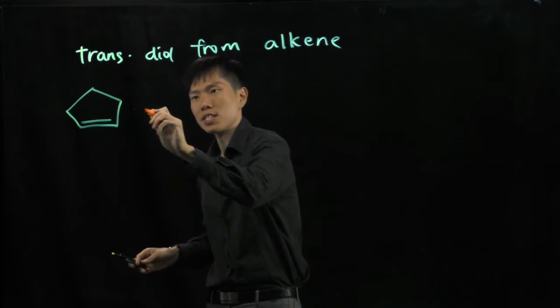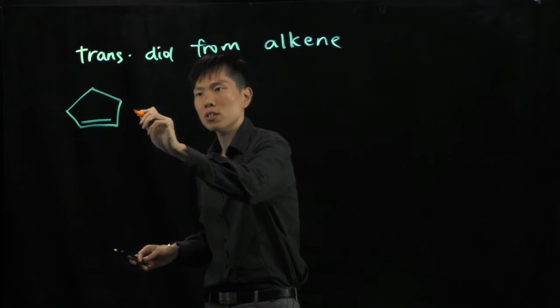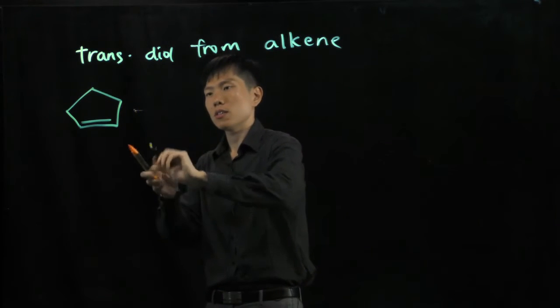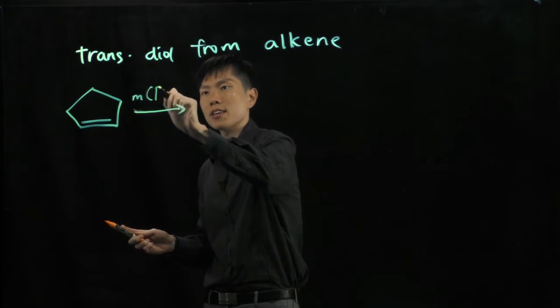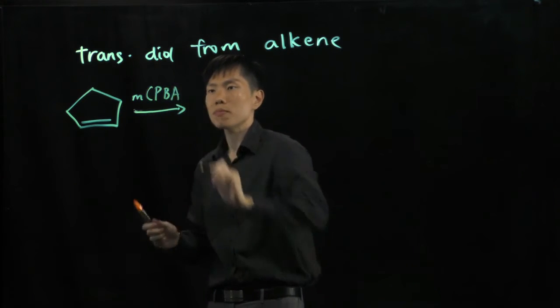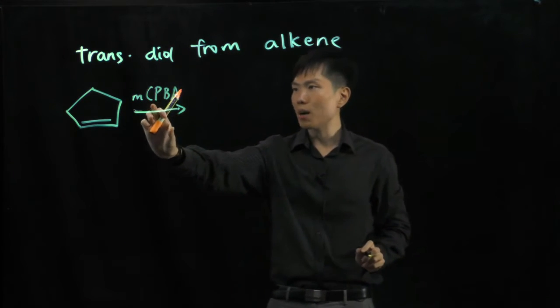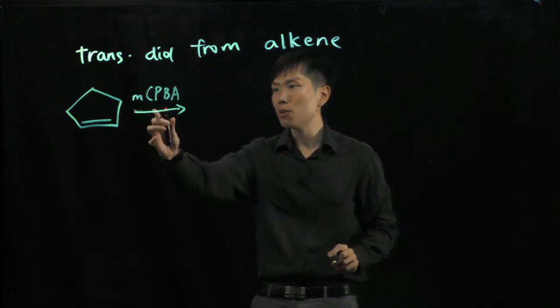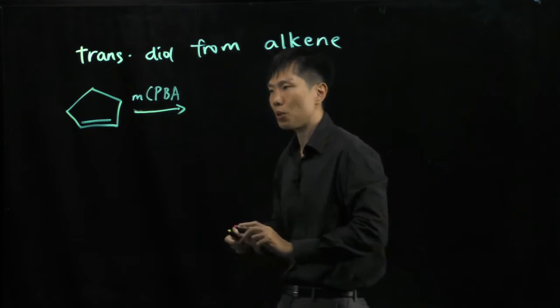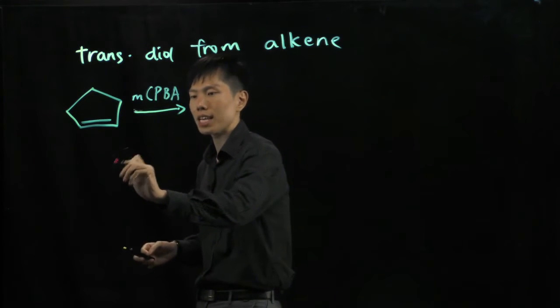The reagent is something very special, MCPBA, small m, CPBA, they are all in uppercase. We call this metachloroperoxybenzoic acid. It looks something like this.